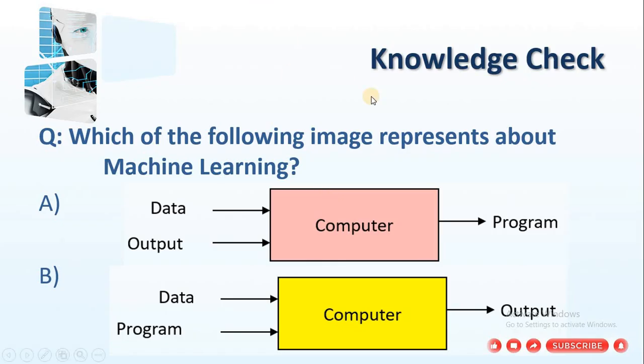So check your knowledge. What we learnt in this video? Which of the following image represents machine learning? Option A is data and output we are giving to the computer, we are getting program. Option B, we are giving data and program to the computer and we are getting the output. Pause the video. Try to answer this question.